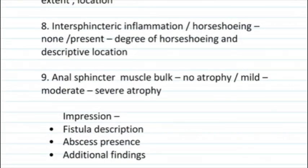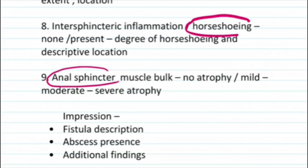Next, describe the intersphincteric inflammation or horseshoeing — present in the intersphincteric space or along the puborectalis muscle — including the degree of horseshoeing, descriptive location, and size. Finally, assess the anal sphincter muscle bulk: whether there is no atrophy, or mild, moderate, or severe atrophy.